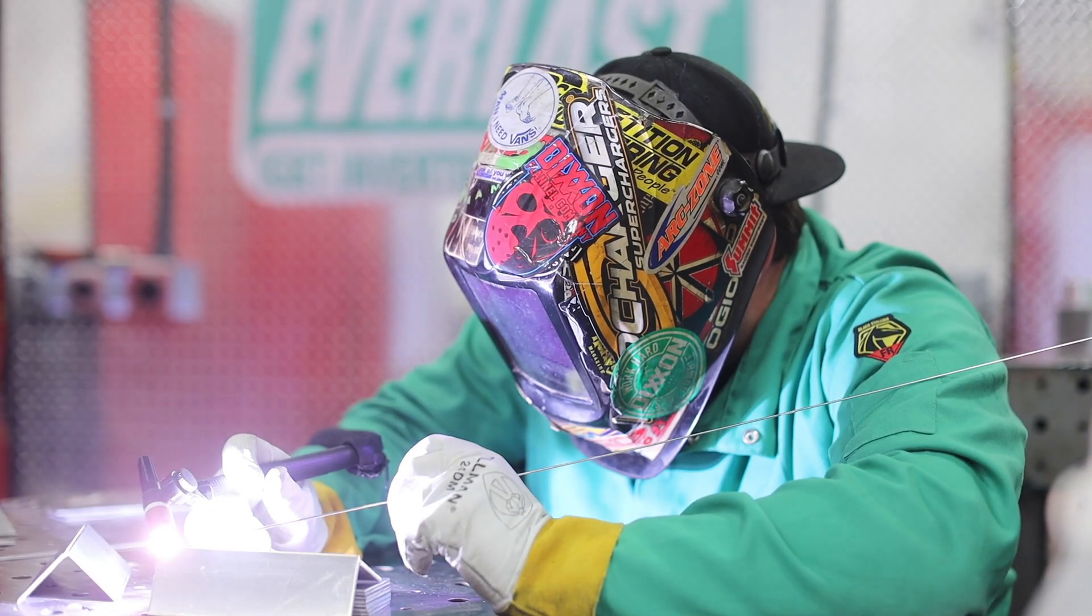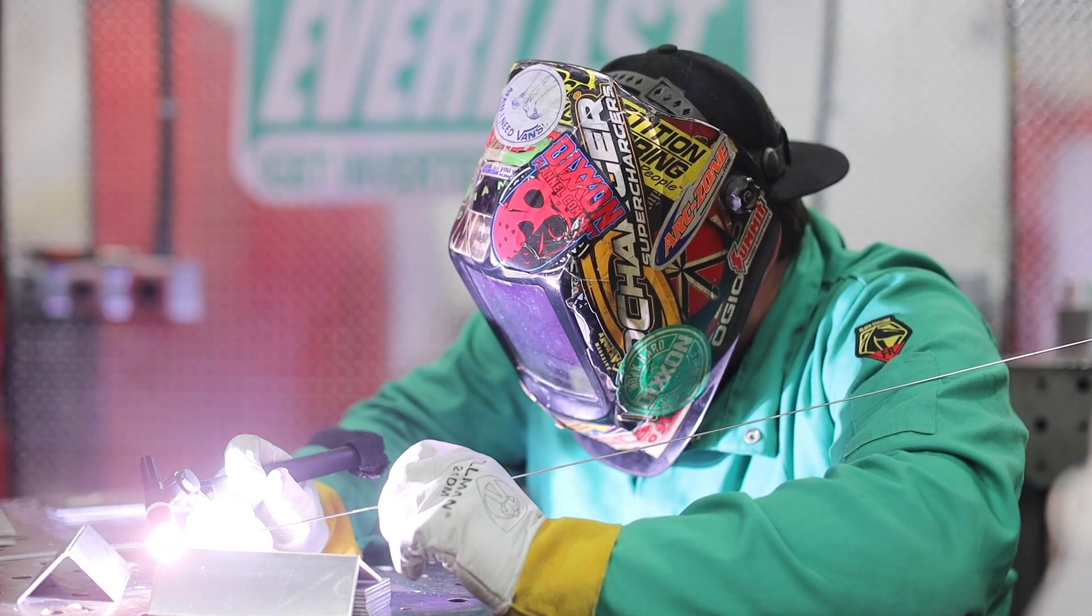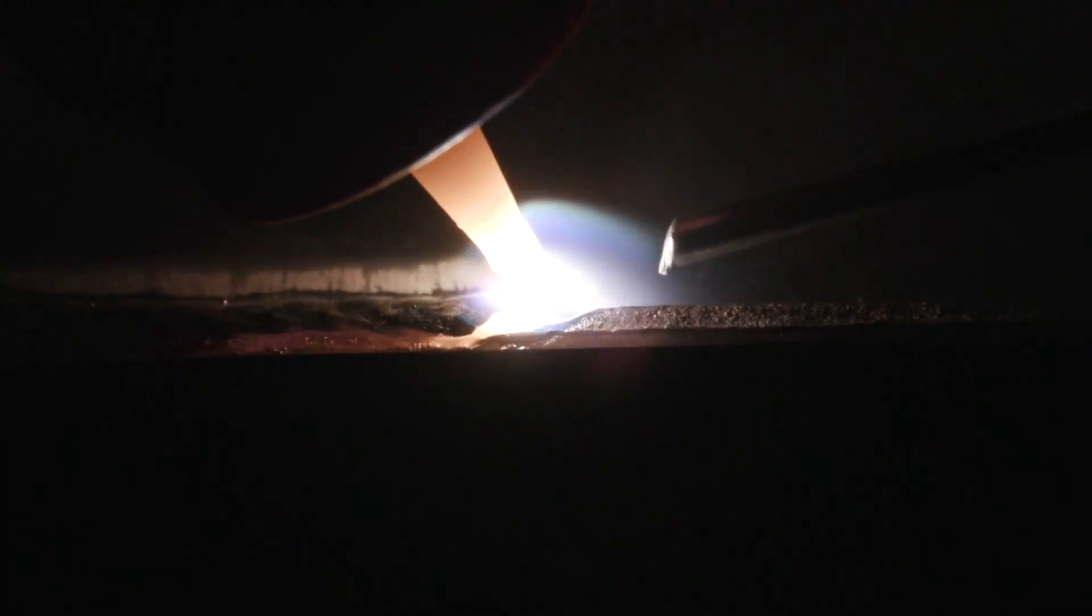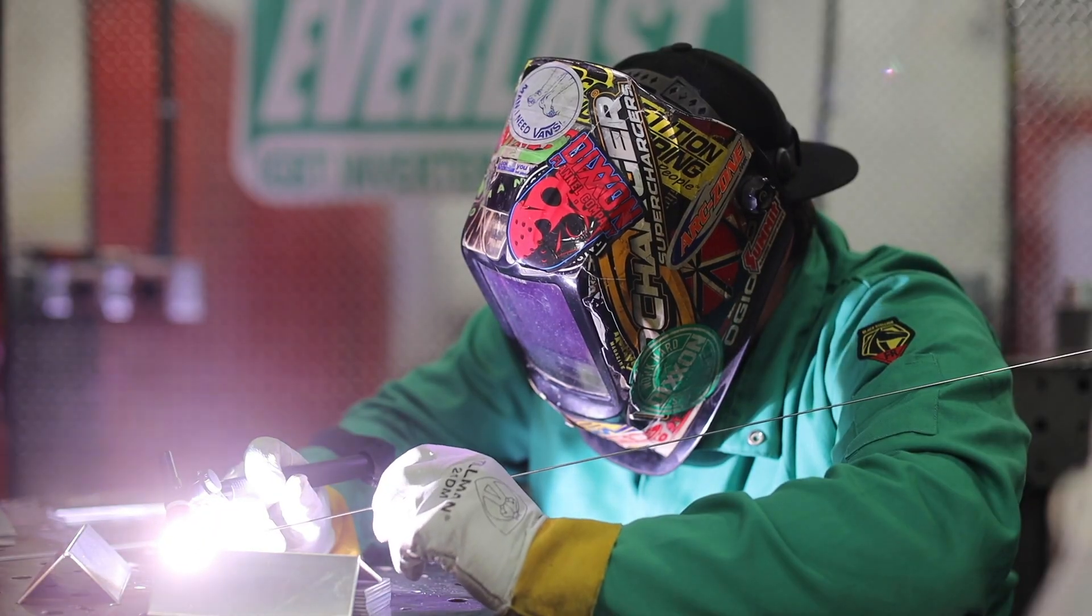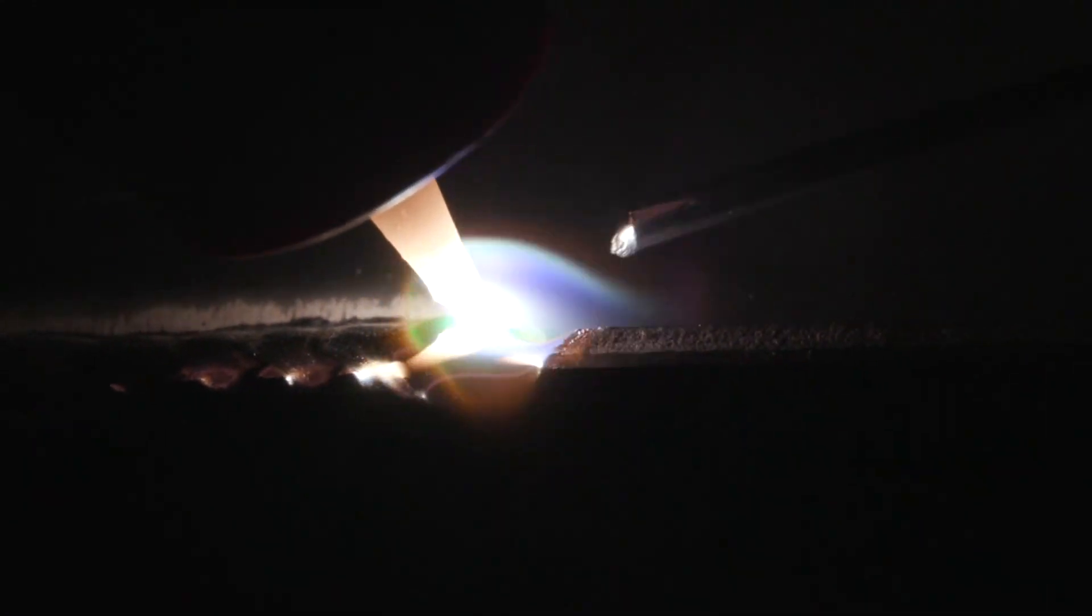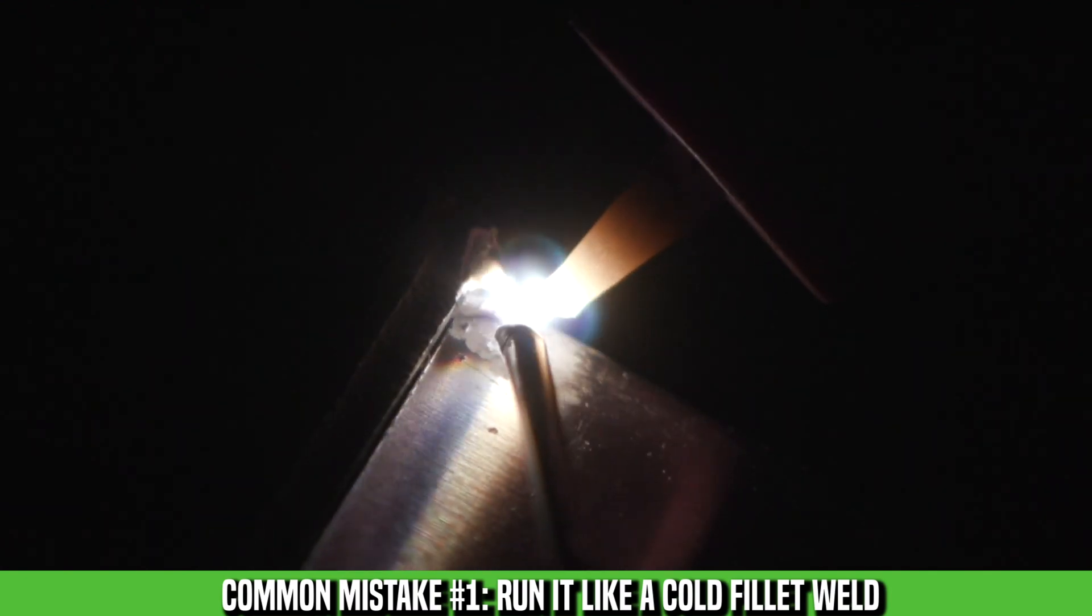So typically on this fit-up, I see people make one of two mistakes. Either they run it as a fillet weld and they keep all the weld underneath the top overlapping plate, which is a very cold weld, or they try to catch that top edge and it leaves a lot of sharp peaks. So if you're seeing these results for this fit-up, I'm going to show you how to fix it.